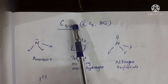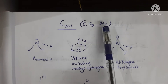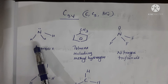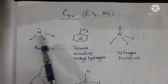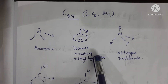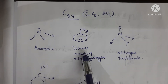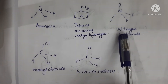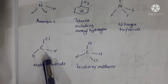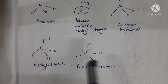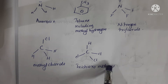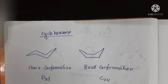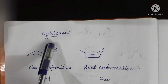For C3V point group examples: ammonia is C3V, toluene including methyl hydrogen atoms is C3V, nitrogen trifluoride (NF3) is C3V, methyl chloride is C3V, and trichloromethane (CHCl3) is also a C3V point group.